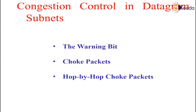Then choke packets. The previous congestion control algorithm is not the most direct. It uses a roundabout means to tell the source to slow down. Why not just tell it directly? In this approach, the router sends a choke packet back to the source host, giving it the destination found in the packet. The original packet is tagged so that it will not generate any more choke packets further along the path, and is then forwarded in the usual way. When the source host gets the choke packet, it is required to reduce traffic sent to the specific destination by x%. Since other packets aimed at the same destination are probably already underway and will generate yet more choke packets, the host should ignore choke packets referring to that destination for a fixed time interval.